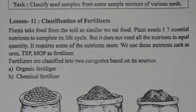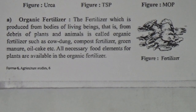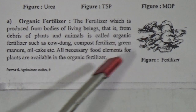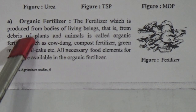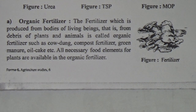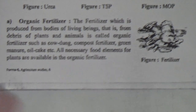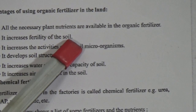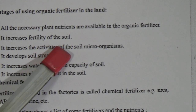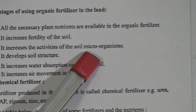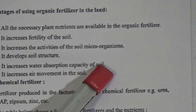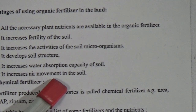You can see the making procedure of these organic fertilizers in your class 7 book. All necessary food elements for plants are available in organic fertilizer. If we use this fertilizer in the soil, the soil will get stronger and fertile. Advantages of using organic fertilizer: all necessary plant nutrients are available; it increases fertility of the soil; it increases the activities of soil microorganisms; it develops soil structure; it increases water absorption capacity of soil; and it increases air movement in the soil.